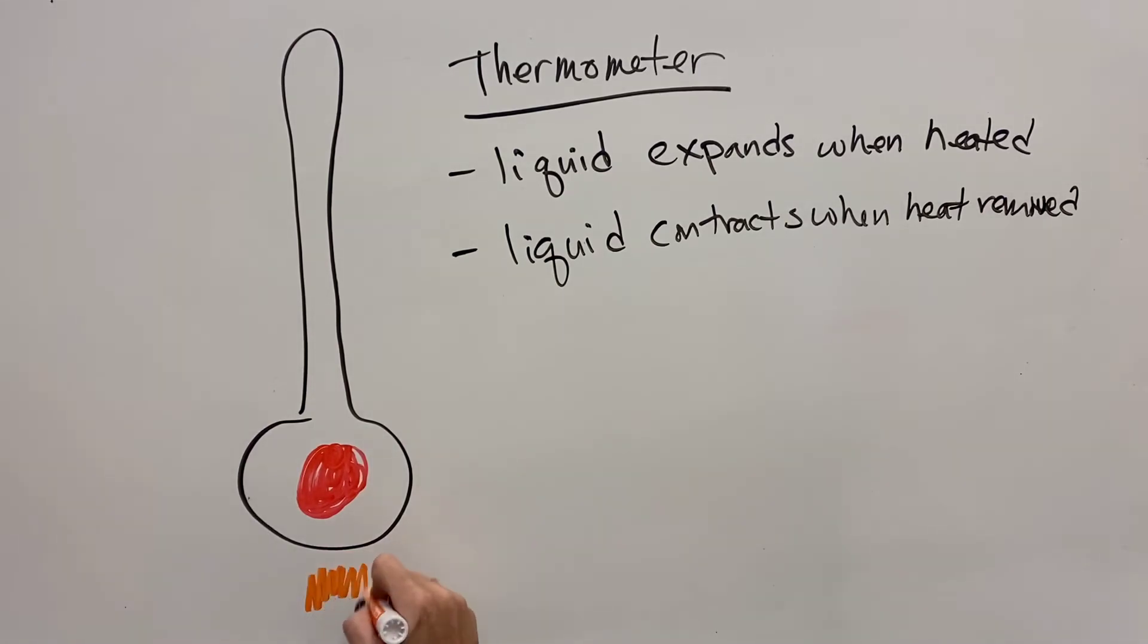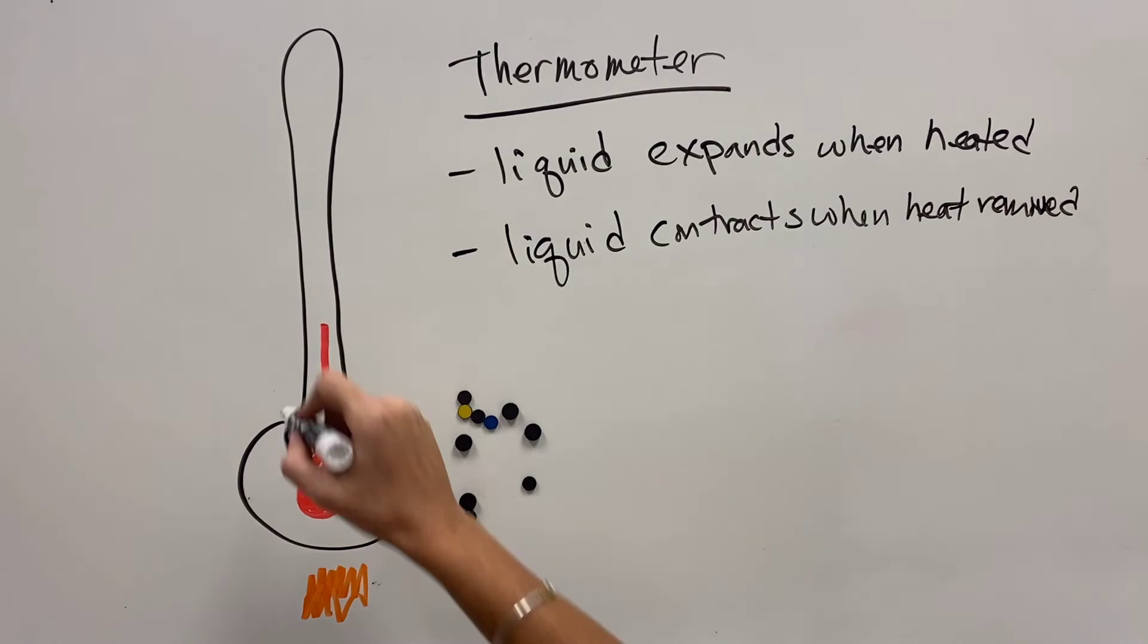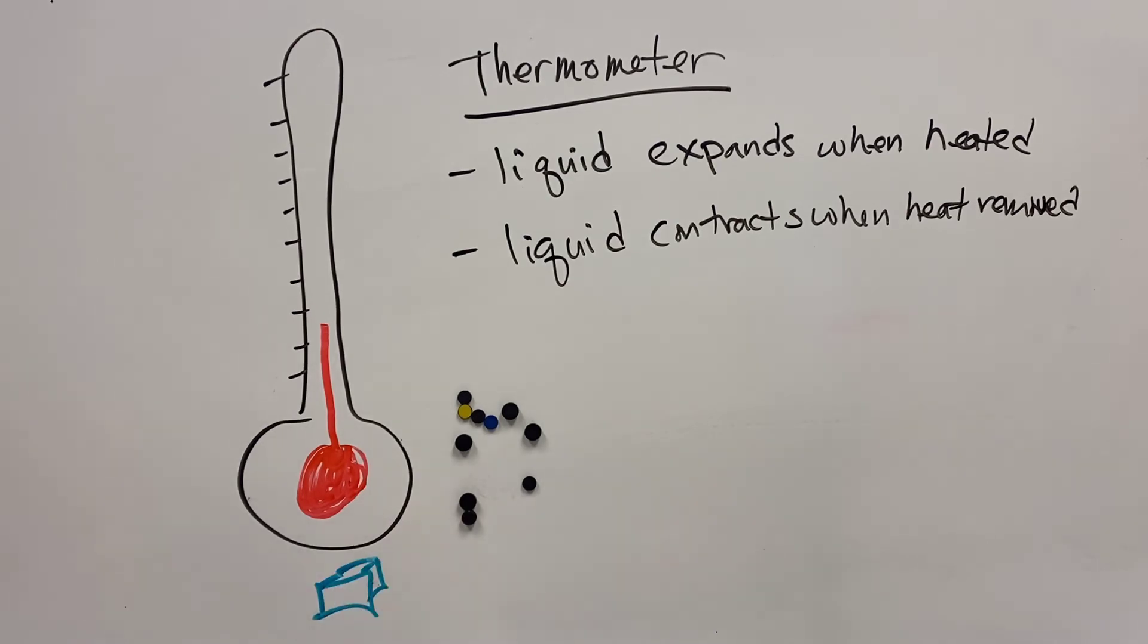And so if we add heat, the particles inside of that liquid start speeding up and spreading out and rising up the only space that they have to move, which is the little tube inside of the thermometer. On the side, we gradient out the little measurements.